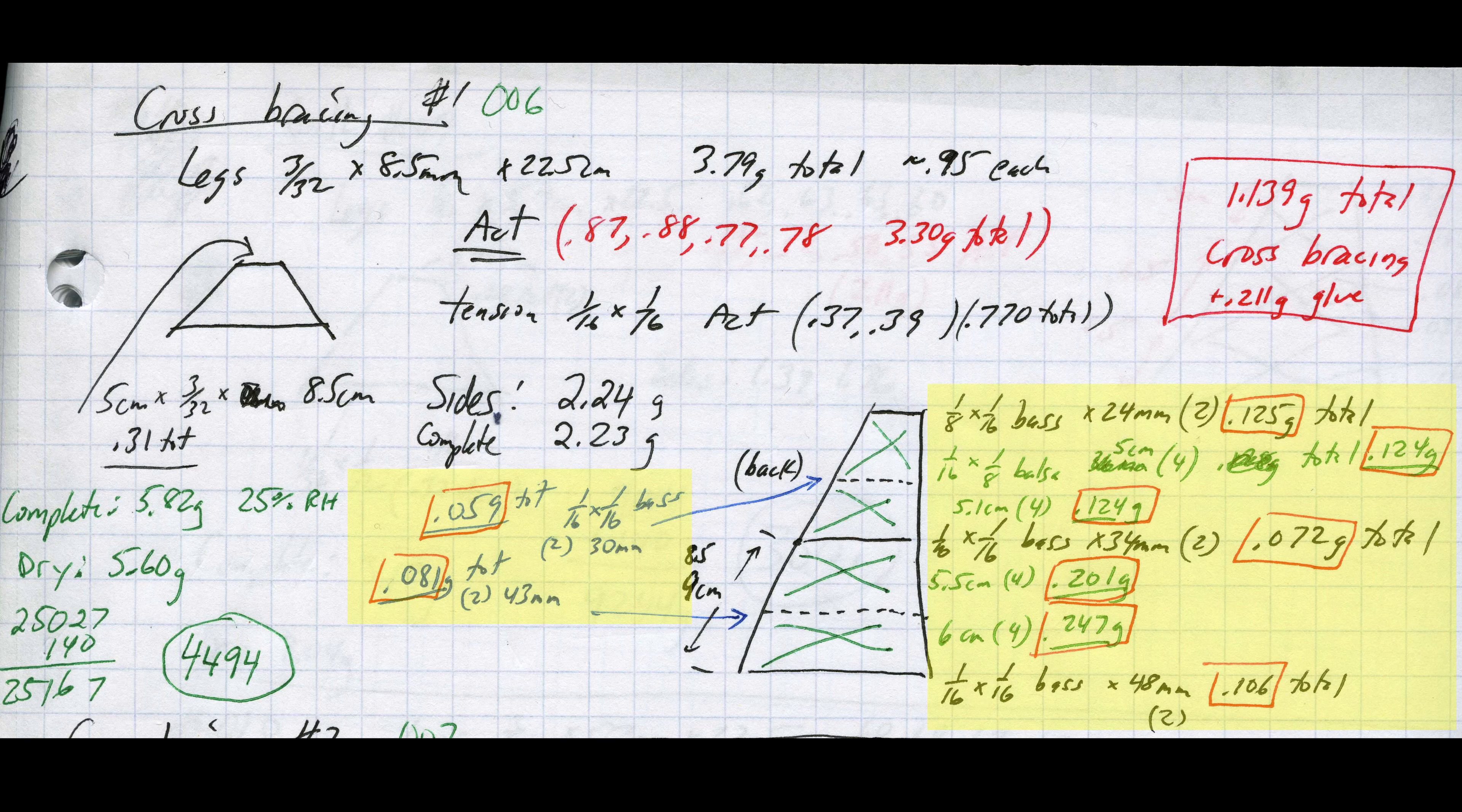Next, it's very important to keep track of every single piece of the cross supports. Not only the dimensions but the mass of each piece. I cut all those pieces ahead of time before assembling them on the bridge. I put a red box around the mass total of each piece group.